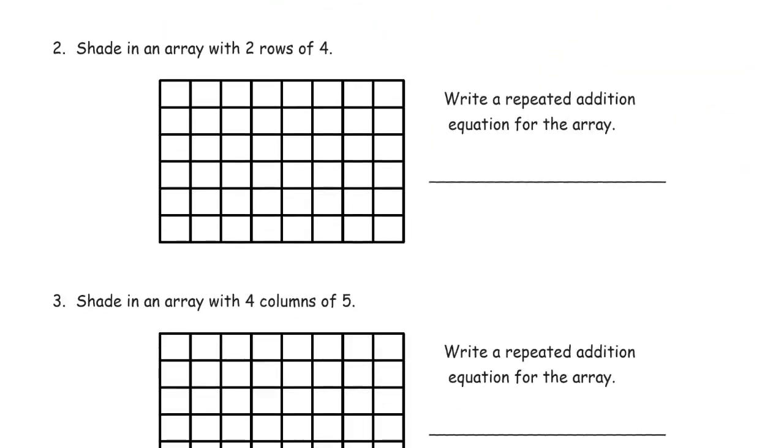Shade in an array with two rows of four. So there's one row, that's two rows, and now I need four in each row. Write a repeated addition equation for the array. Now I'm looking for two groups of four, so that's two fours. But you could have also written two plus two plus two plus two equals eight.